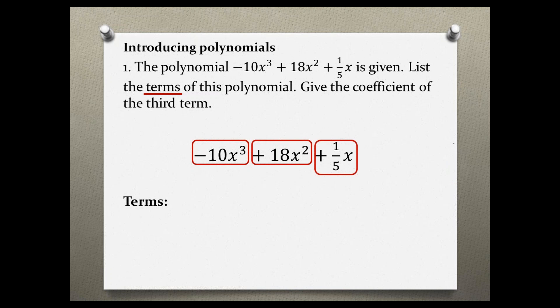So listing the terms, we have negative 10x cubed. Then our next term is 18x squared.